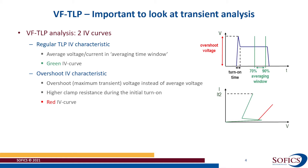Now, every ESD clamp circuit has a certain turn-on time. During turn-on time, the ESD clamp switches from a high impedance state to a low impedance state. For fast transients like CDM, it is important to select ESD solutions with a short turn-on time as this will limit the voltage overshoot. Plotting the VF-TLP overshoot IV curve is a fast and easy way to monitor the triggering speed of an ESD circuit when subjected to CDM stress.